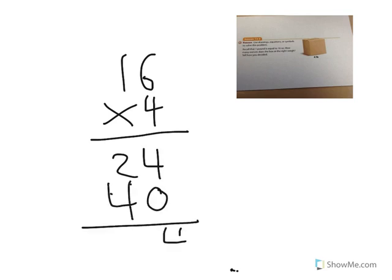So, four plus zero equals four, and two plus four equals six. So our answer would be 64 ounces.